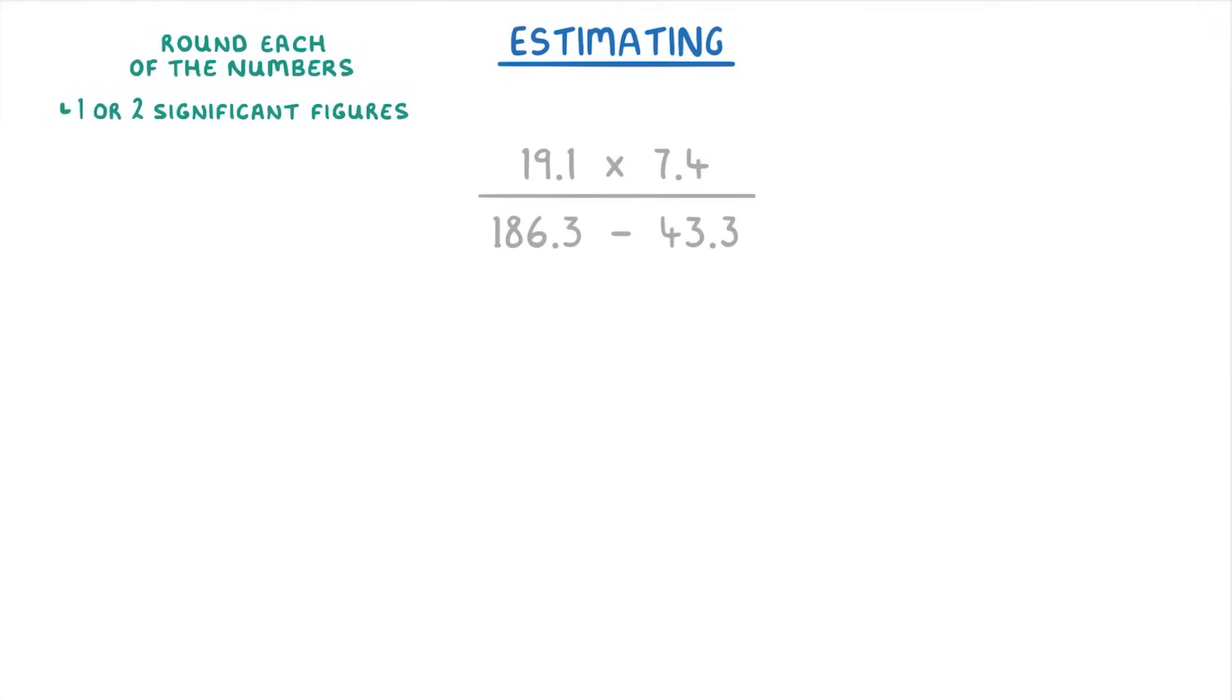But it's up to you depending on the particular numbers involved and how accurate you want your answer to be. So here, on the top, we could round the 19.1 up to 20, and the 7.4 down to 7, so that our numerator becomes 20 times 7, which is 140.